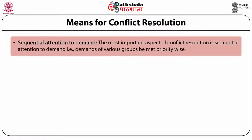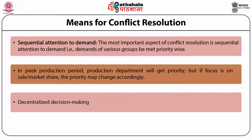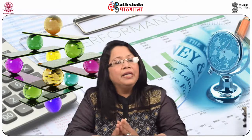Sequential attention to demand is the most important aspect of conflict resolution — that is, the demands of various groups are met priority-wise. In the peak production period, the production department will get priority, but if the focus is on sales or market share, the priority may change accordingly. Decentralized decision making is another approach, and we will now discuss decision making at the top management level.